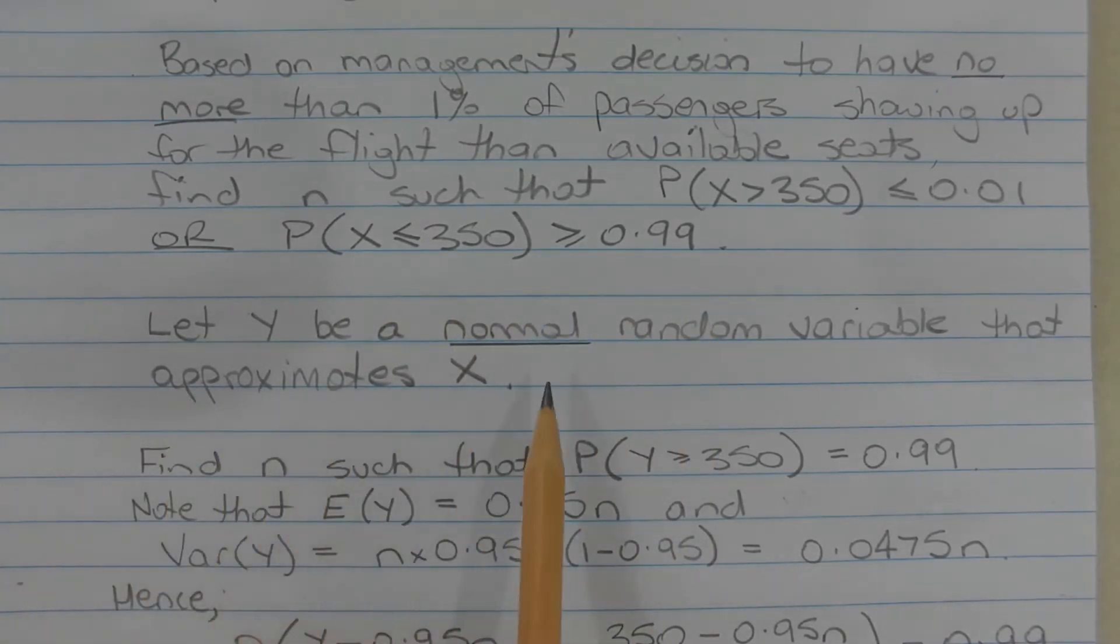Let Y be a normal random variable that approximates the random variable X. We need to find N such that the probability that Y is greater than or equal to 350 is equal to 0.99.